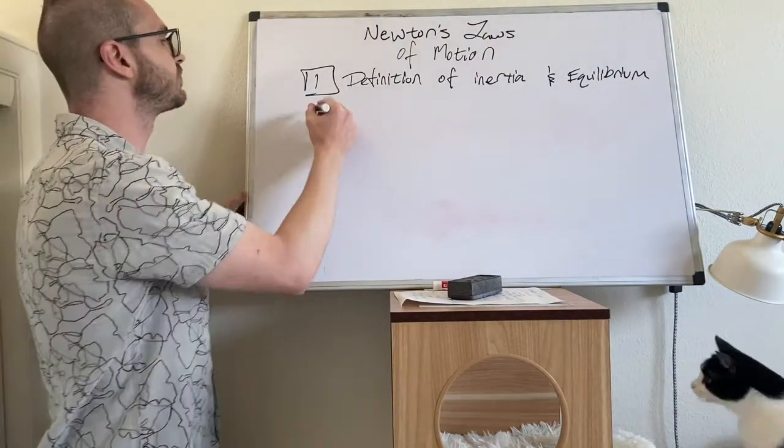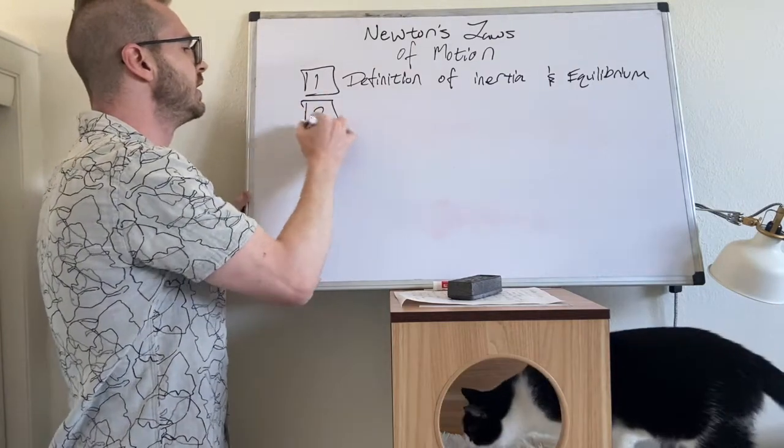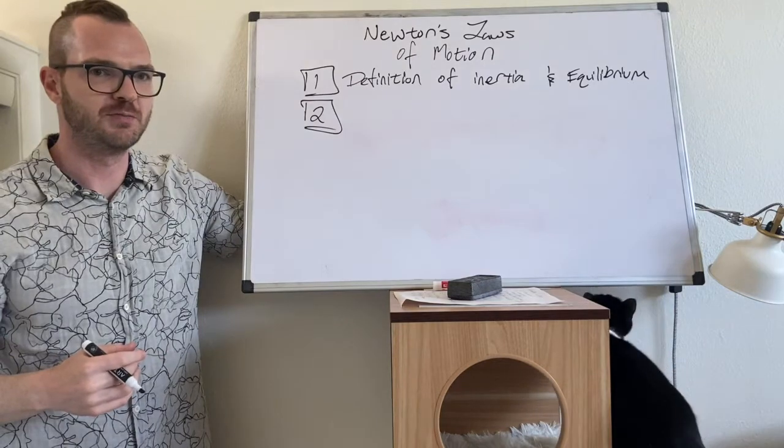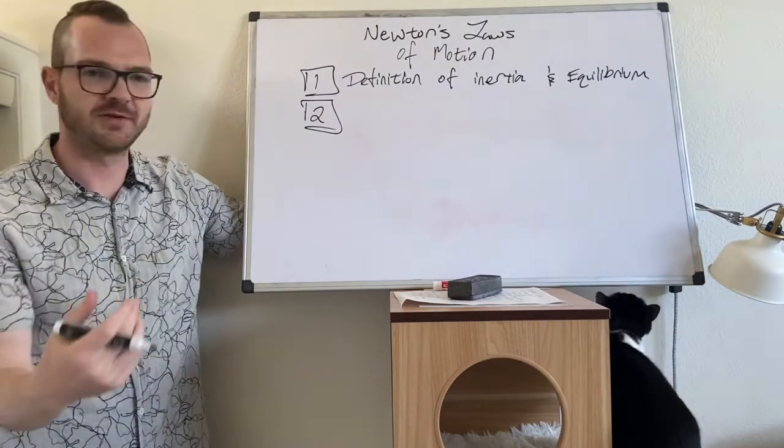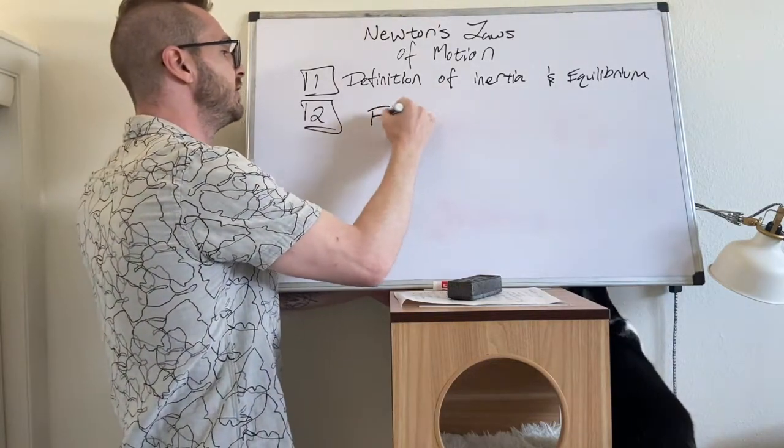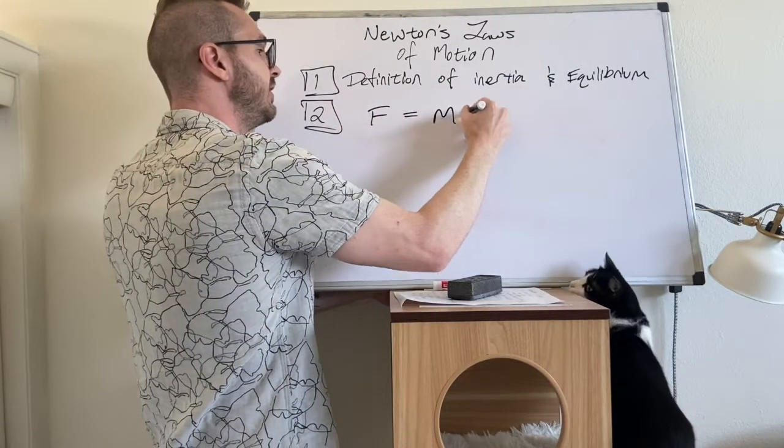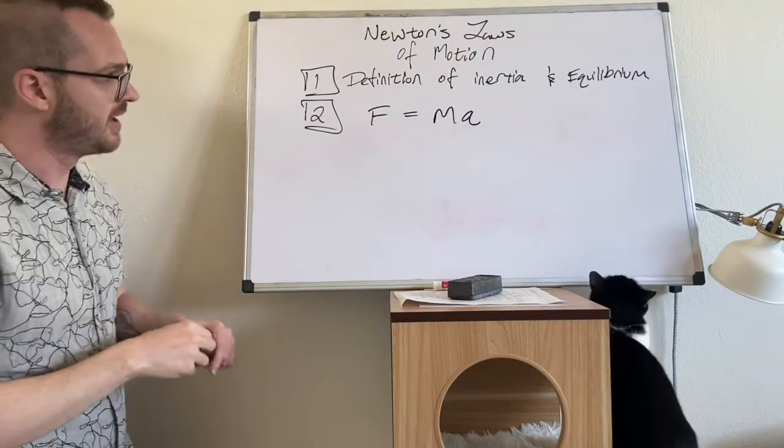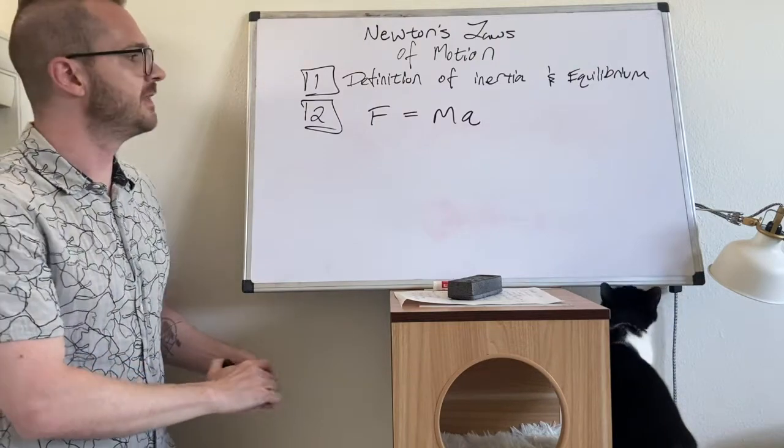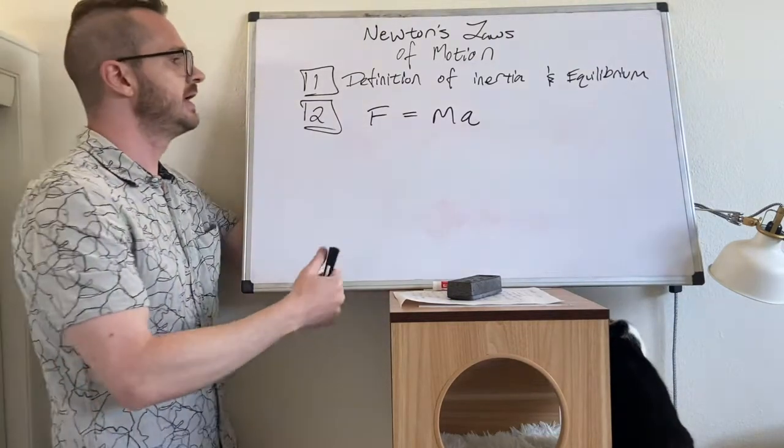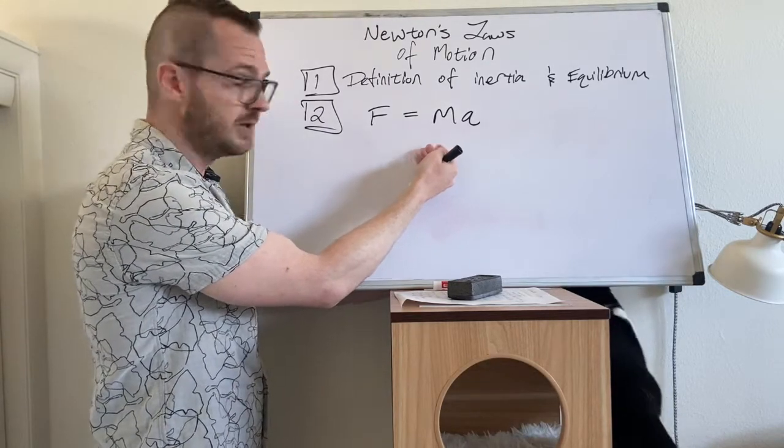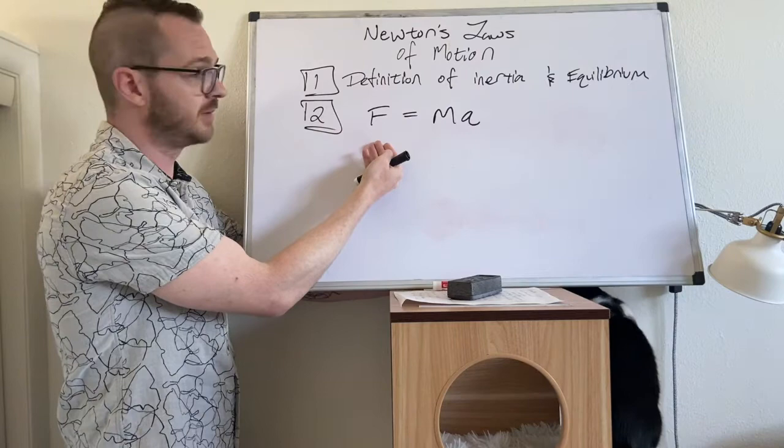Number two. Newton's second law, you might think you know what it is. You might have encountered it in a high school physics class or something. So I'm going to write down the high school physics version of it, which is F equals MA. Now, Newton's second law is not F equals MA. The formal definition of Newton's second law is that the differential change in linear momentum is equal to the sum of forces on an object.